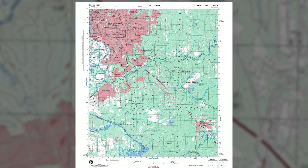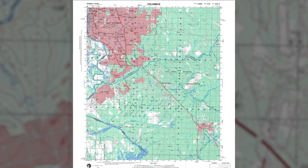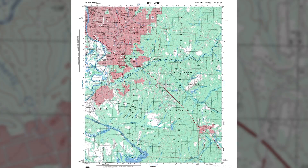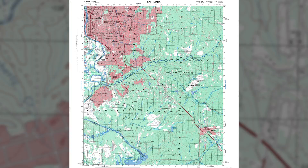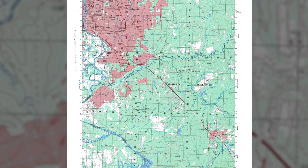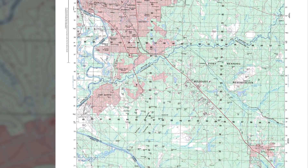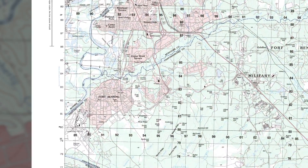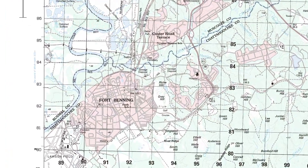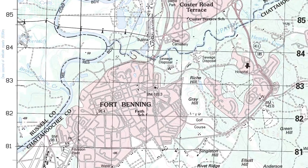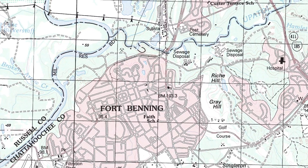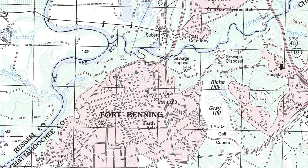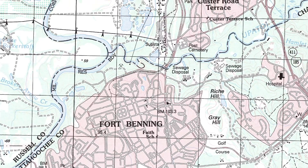There are six colors represented on a military map. Each color corresponds to a specific feature on the map. Black indicates man-made features such as buildings and roads, surveyed spot elevations, and all labels.